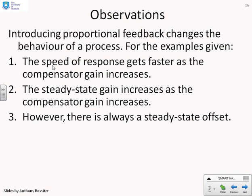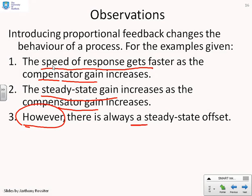So the observations. Introducing proportional feedback changes the behavior of a process. We've noticed that the time constant and the gain changes as we change the proportional feedback. We've tended to notice that for all our examples, the speed of response gets faster as the compensator gain increases. The steady state gain increases as the compensator gain increases. However, and this is critical, there was always a steady state offset.